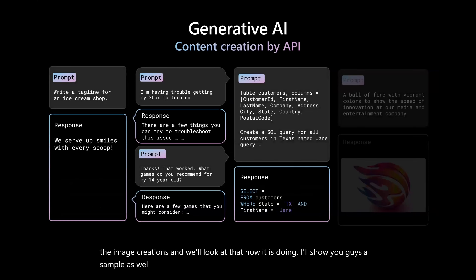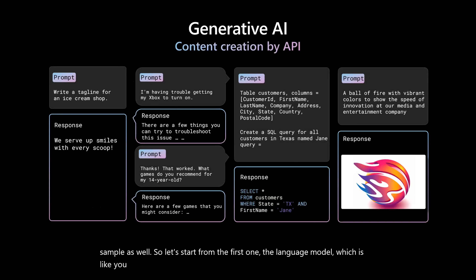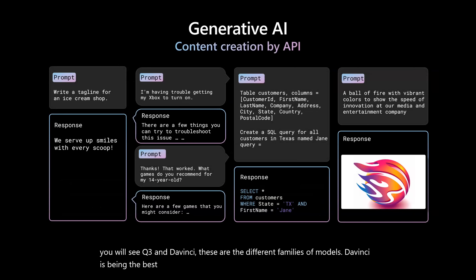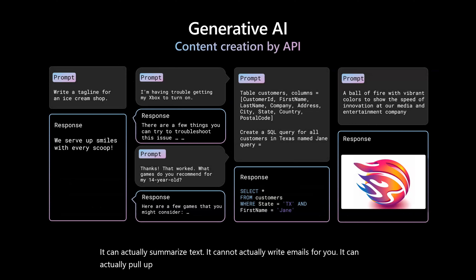Starting with the language model, you'll see Ada, Babbage, Curie, and DaVinci — these are the different families of models. DaVinci is the best of the best. It can summarize text, write emails, pull up information, and do many different things.